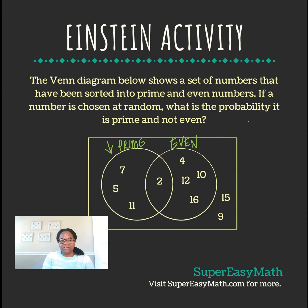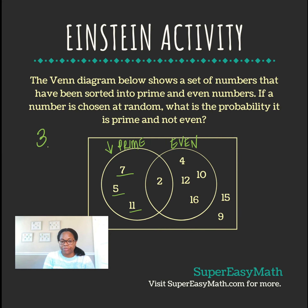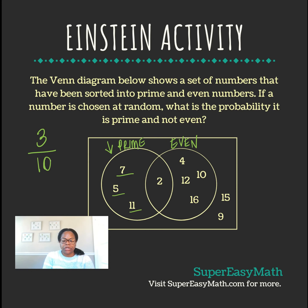The question is: if a number is chosen at random, what is the probability it is prime and not even? We have 3 numbers that are prime. When referring to probability, you always put the number you are considering as the numerator in a fraction, and in this case we have 3 prime numbers. The denominator is the total number of choices, so we count all of the numbers — and all of those numbers add up to 10. So the chances of pulling a prime number is 3 out of 10.